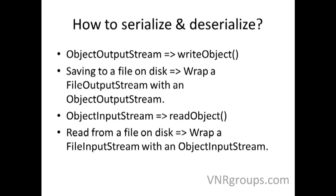Remember the decorator pattern, which lets you add additional responsibilities by wrapping an object with another object. In this case, you wrap a FileInputStream — it reads from a file and gives you bytes. And what do you do with those bytes? You want to interpret those bytes as an object. So that is why you wrap those bytes with an ObjectInputStream to interpret the bytes as an object.